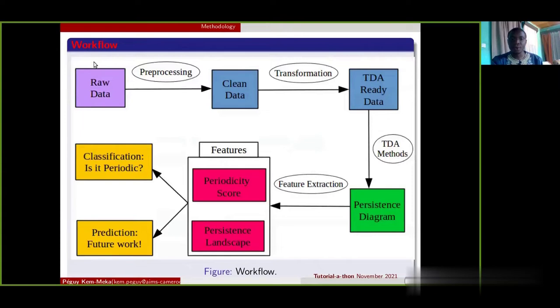We start with the whole data that we then pre-process to have clean data. When we have the clean data, we do data transformation to have the TDA-ready data. When we have our TDA-ready data, we apply TDA method to have our persistent diagram from which we extract two features: the periodic score and the persistent landscape. And both features will help us to do classification and to make prediction.